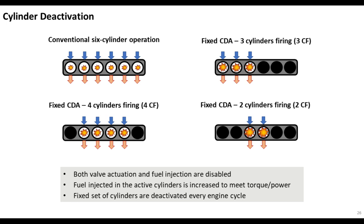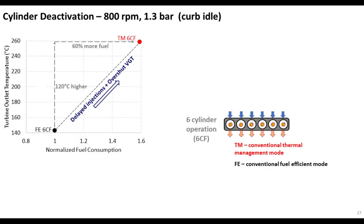So, cylinder deactivation. A little bit about nomenclature: conventional operation is six-cylinder operation. When we say 3 CF, this is three cylinders fired — three of six cylinders. 3 CF means basically half the cylinders are deactivated, with no valve motion and no fuel injection. 4 CF is four cylinders fired. 2 CF is two cylinders fired, and so on and so forth.